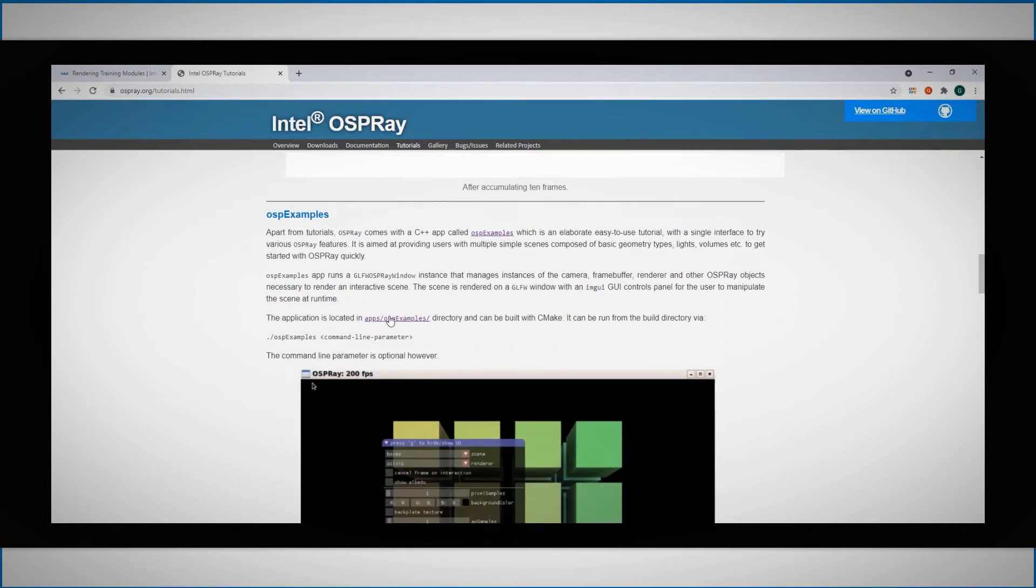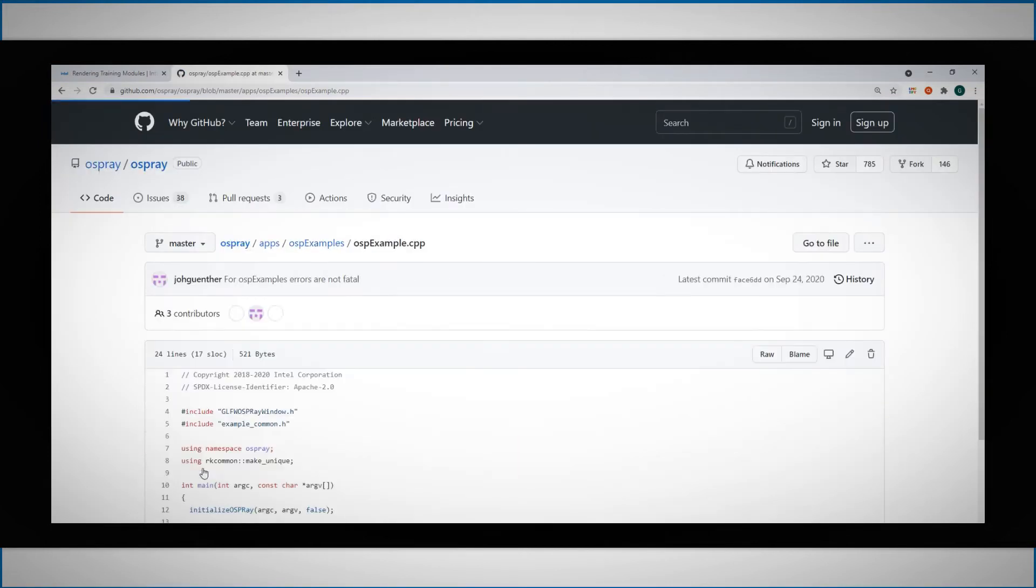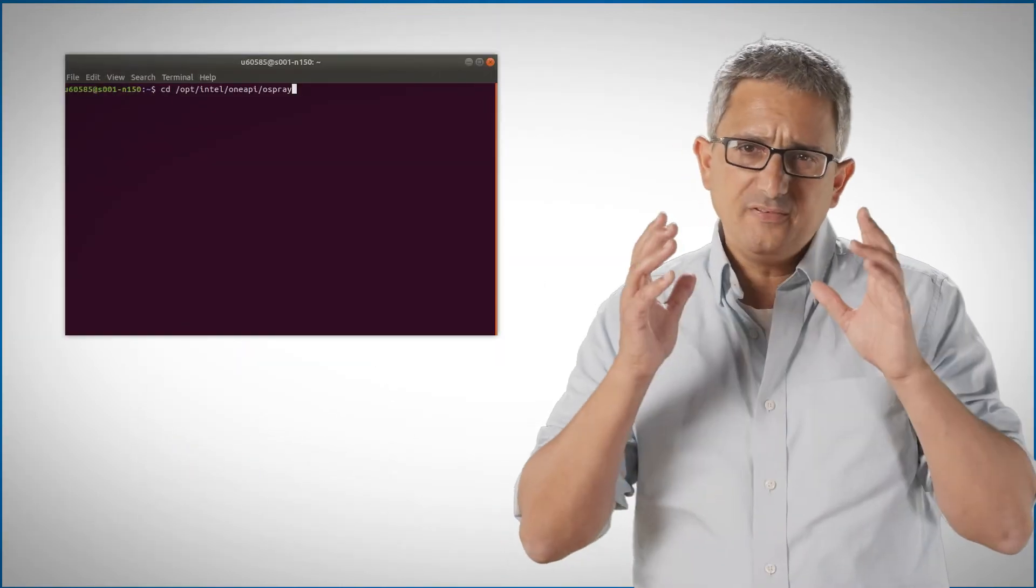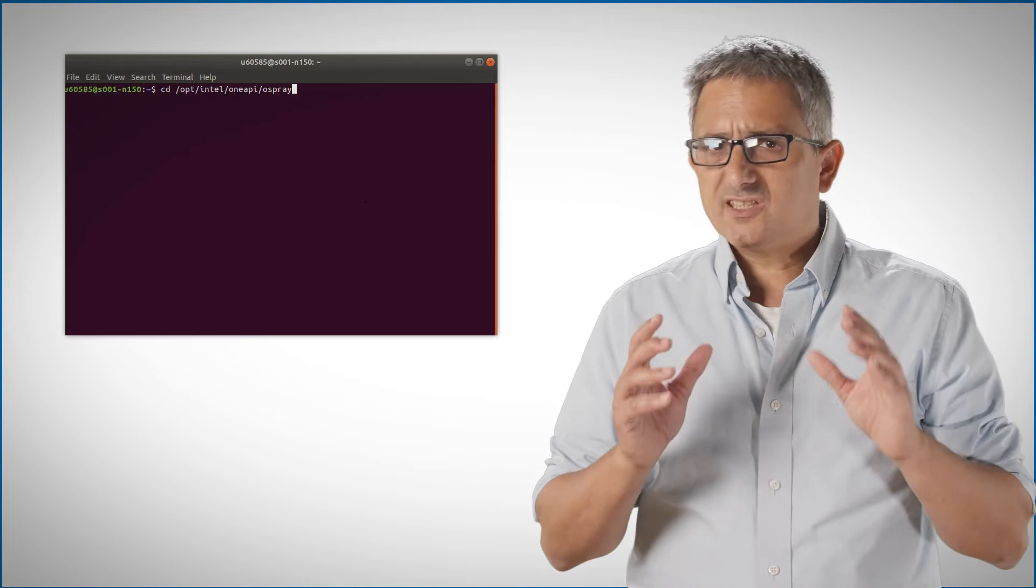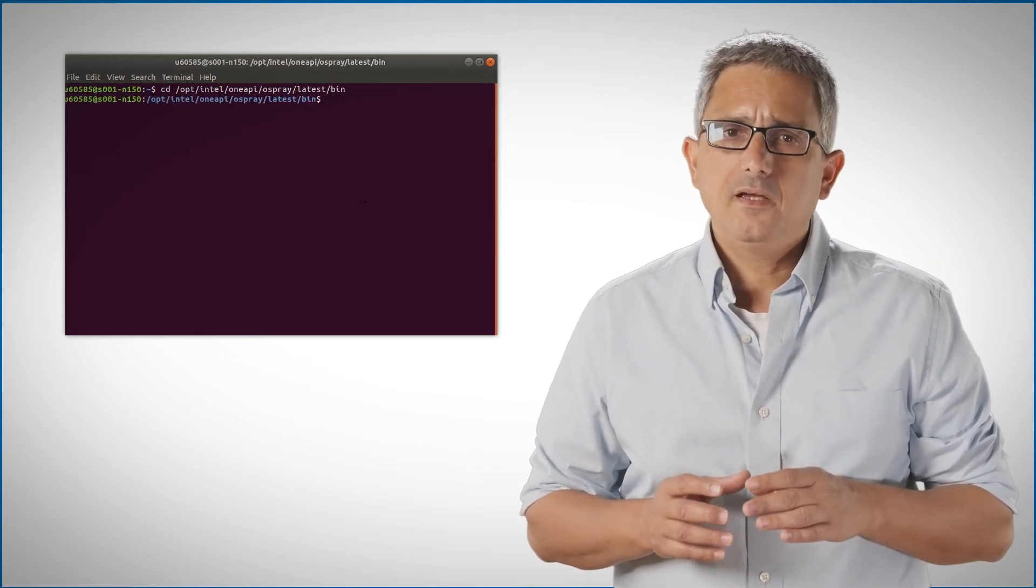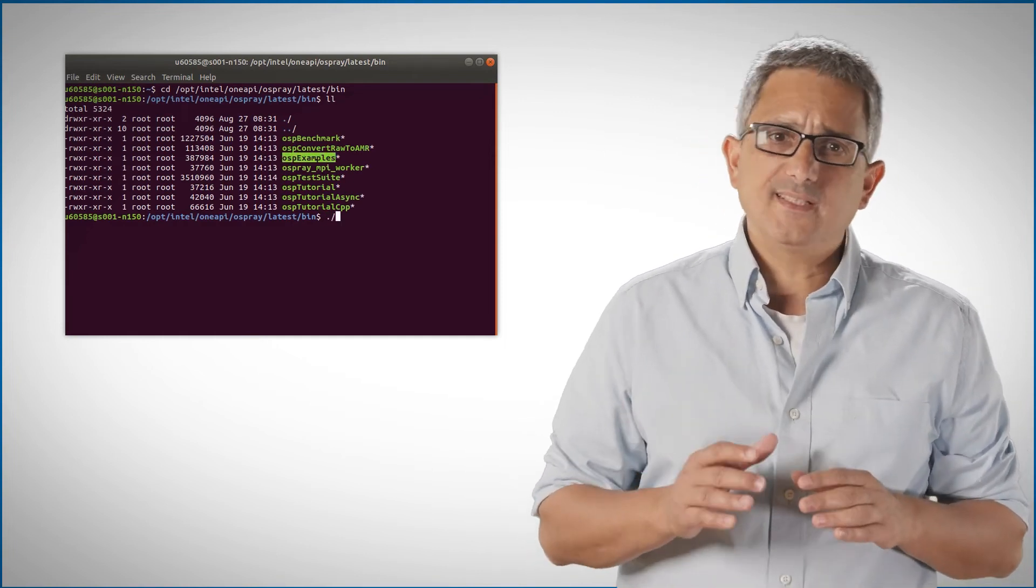This one is OSPRay example. If you just want to try it out, to benchmark the performance, get a VNC on the dev cloud, instructions in this video description. On your VNC session, just navigate to OSPRay directory, latest, bin and the code is built and ready to run. Let's run the OSPRay example.